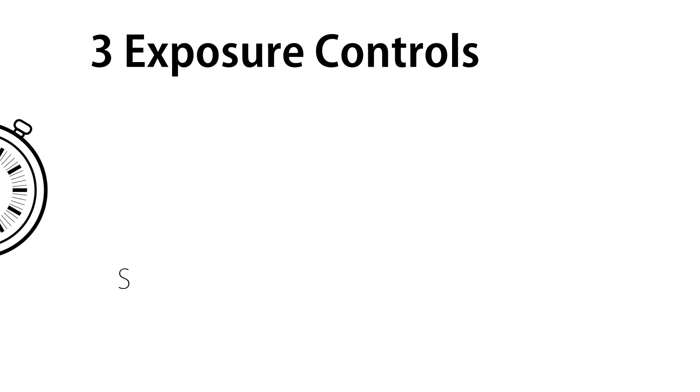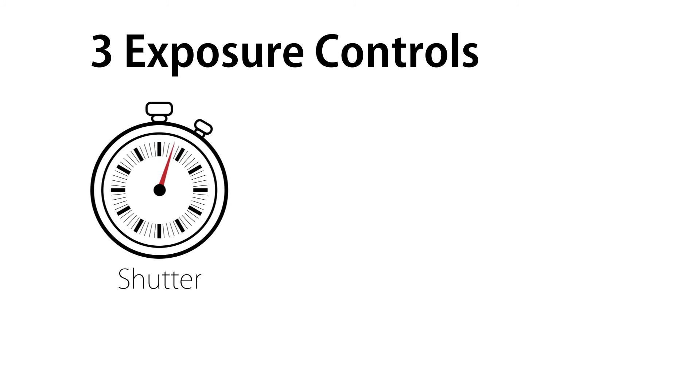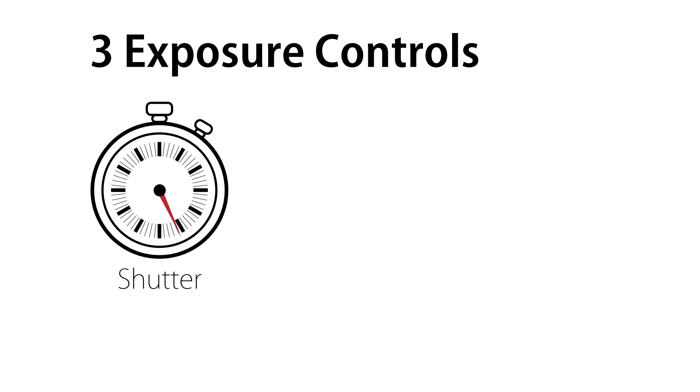Exposure is controlled three ways. We will go into more depth in future videos. The first way is through shutter speed, which is how long the sensor is exposed to light for each image.